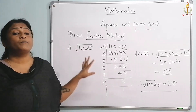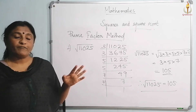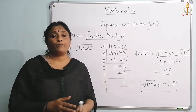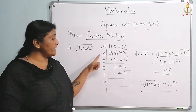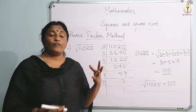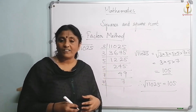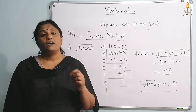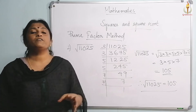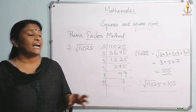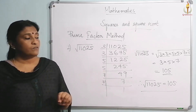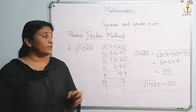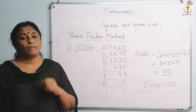Perfect squares are numbers where, when you find the prime factorization, you will definitely get pairs. So when you are not getting pairs, either you have done something wrong or the given number is not a perfect square. All perfect squares will definitely have pairs. This is how you find the square root of a given number using the prime factor method.